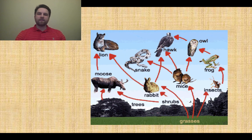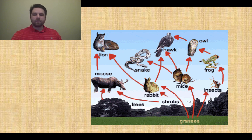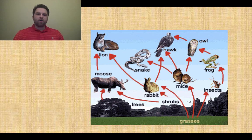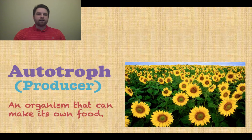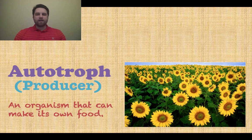There's a little example of a food chain right there, showing a lot of different organisms from grass to mice and all the way up to hawks and lions. So let's see if we can identify some of the creatures that make up different food chains.